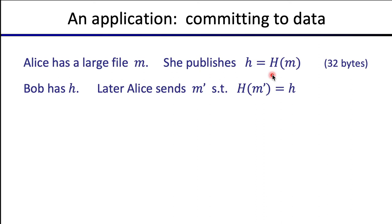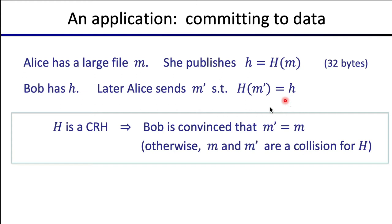Suppose Bob has the little h output of the hash function. Later, Alice sends Bob a message M prime, claiming it's the message she committed to. Bob can check that H(M prime) equals little h. If the hash function is collision resistant and this equality holds, then Bob is convinced that M prime really is the message Alice committed to. If somehow Alice found M and M prime such that H(M) equals H(M prime) but M is not equal to M prime, that would be a collision — which is difficult because H is collision resistant.